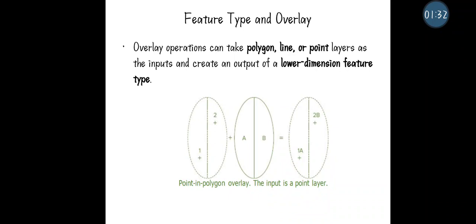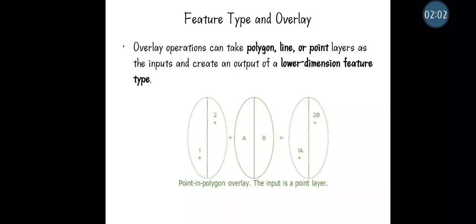Regarding feature types in overlay: when merging two polygons, it may be point and line, line and polygon, point and polygon, or polygon and polygon. The resultant output contains the geometrical features of both and the attributes of both. However, for the geometrical feature, the lower dimensional feature type will be reflected in the output of the merged result.